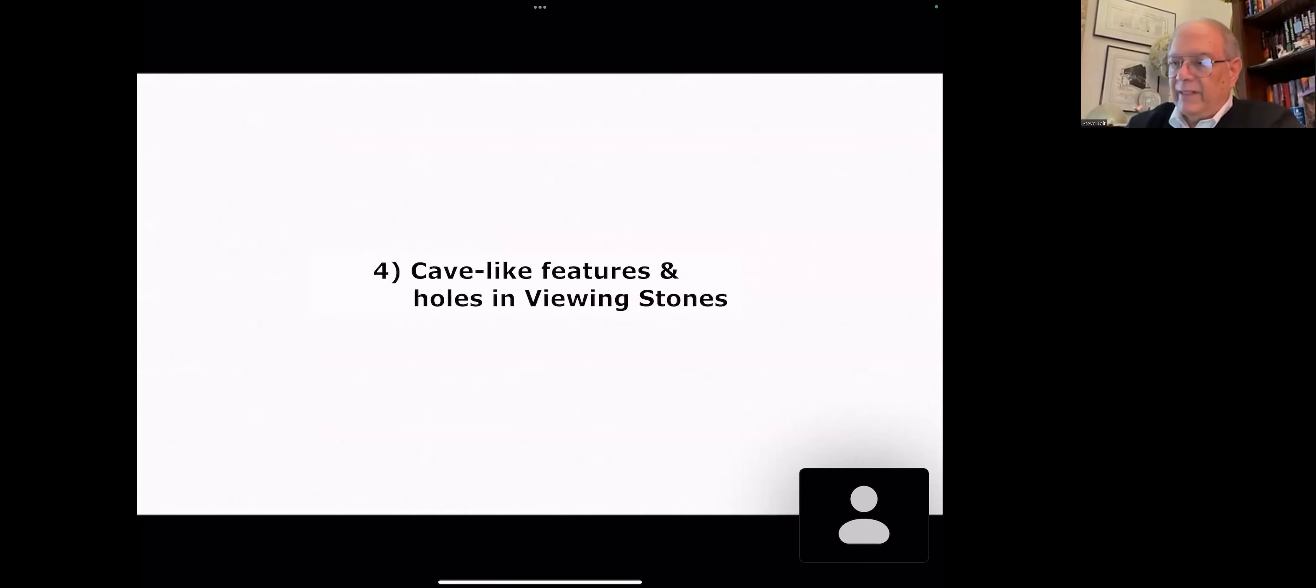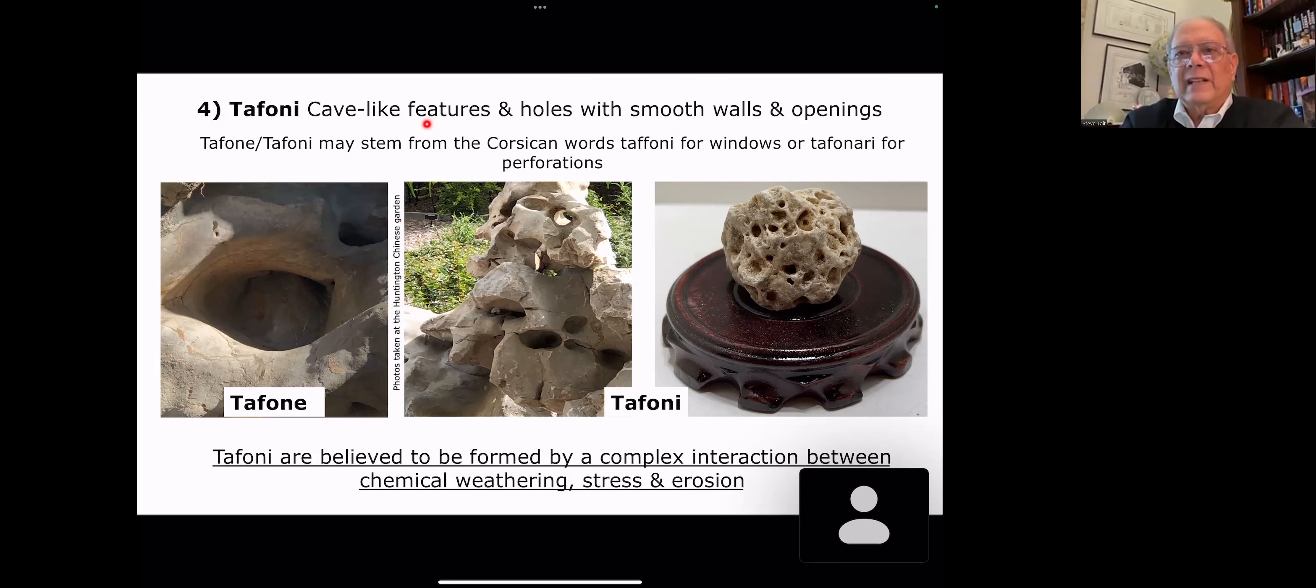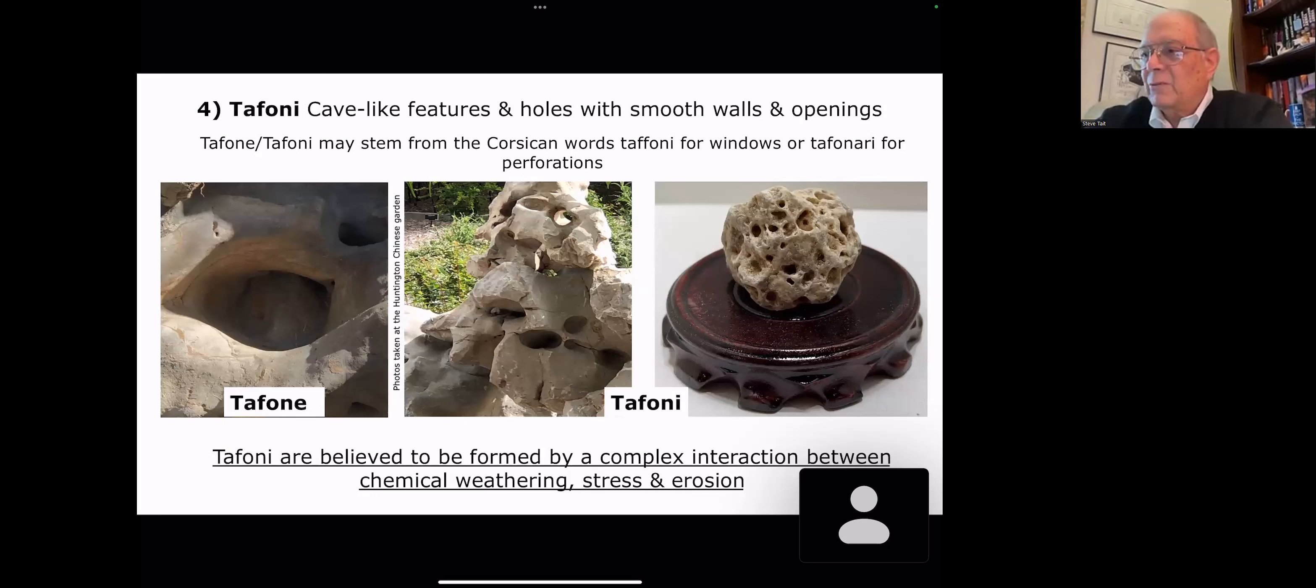What are the cave-like features and holes that you find in viewing stones? I wondered about that for a long time, and they're called tafoni. They're cave-like features and holes with smooth walls and openings. The word probably stems from Corsican words tafoni for windows or tafonari for perforations. There's also a close word in Greek, but it's a word for sepulchre, and I tend to think of this as being more cave-like. As you can see, the smooth walls. And this does look like the opening of a cave.